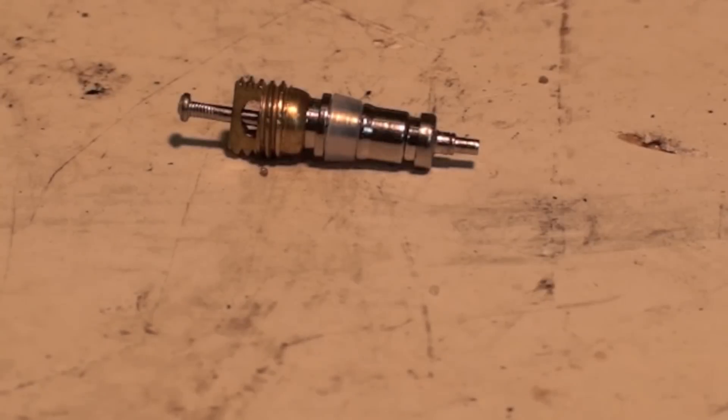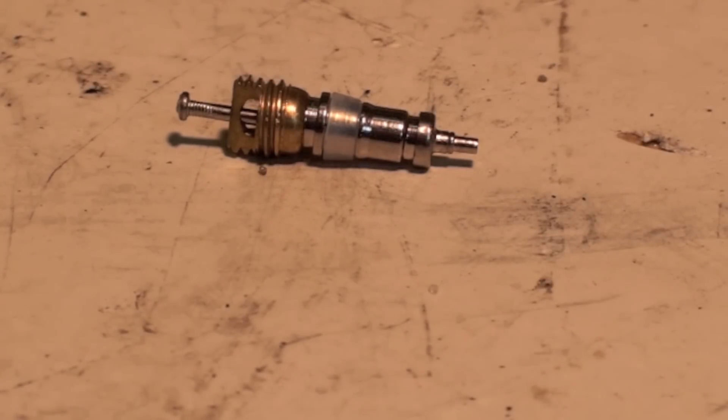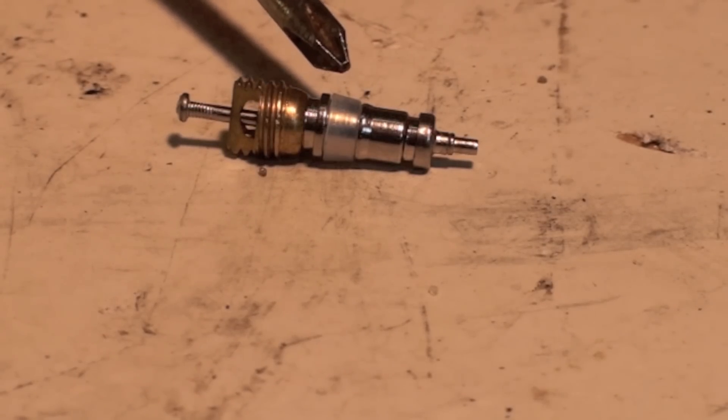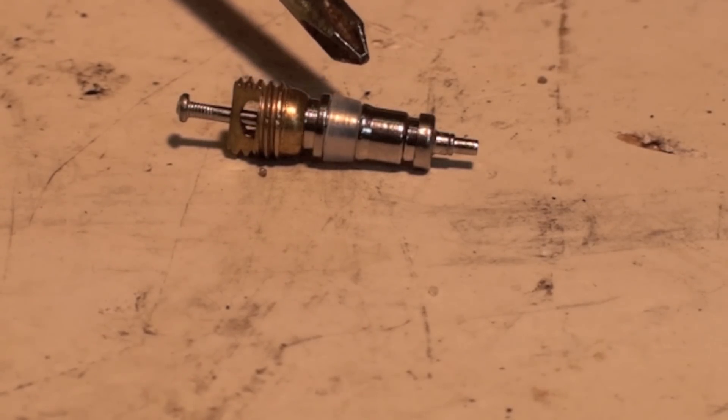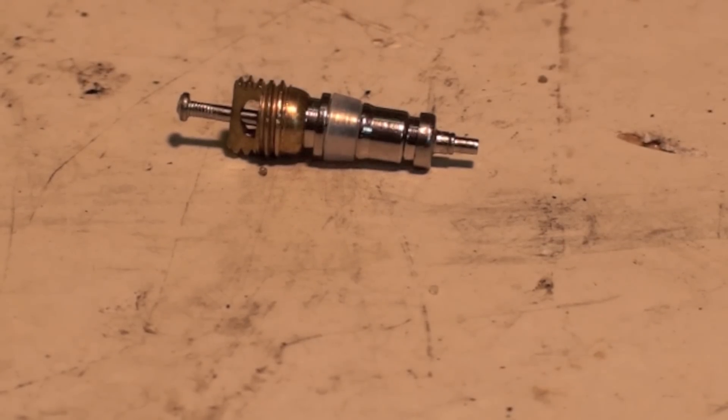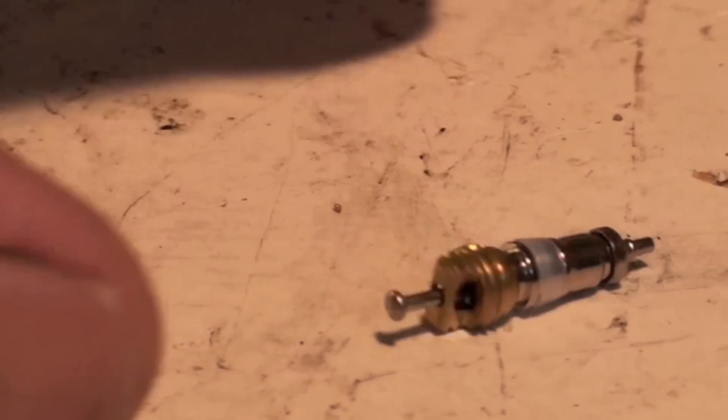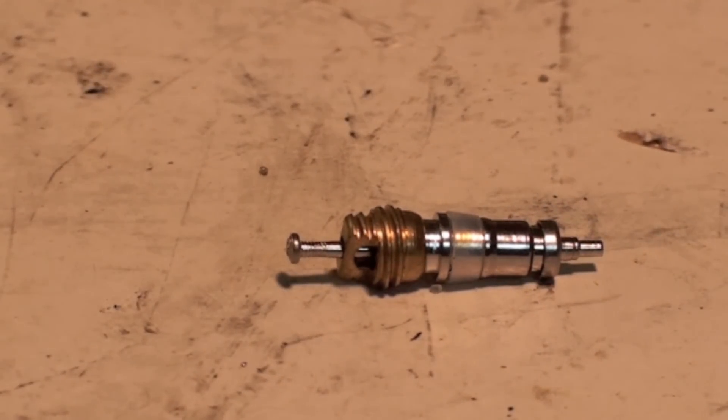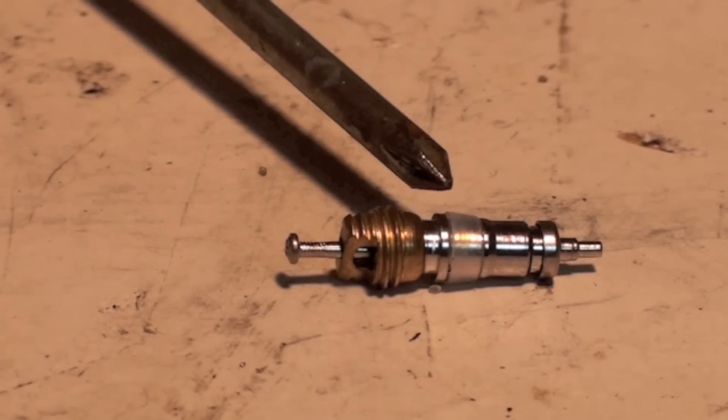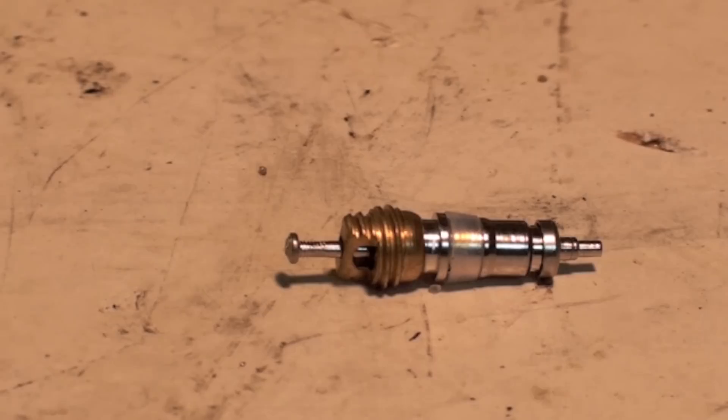Another little thing about this Schrader: I pointed out that this is a gasket right here that seals this thing. When you take a Schrader out, if you're doing a vacuum or something like that, you usually lay it on the unit and it rolls around. See where it's rolling right there? It's rolling right on that gasket. Now that gasket is going to have oil on it and it's going to pick up dirt, so when you put it back in there it may or may not seal.